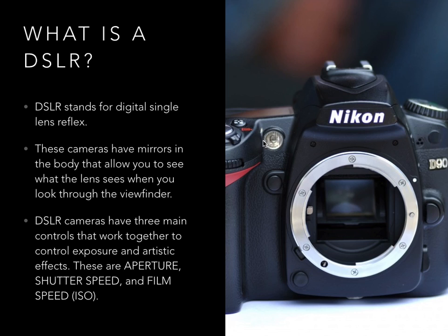All DSLR cameras have three main controls that work together to control exposure and artistic effects. Most other cameras also have these controls, but all DSLRs will definitely have them. These controls are aperture, shutter speed, and film speed, which can also be referred to as ISO.